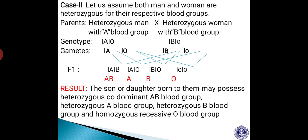Now let us go through case 2: let us assume both man and woman are heterozygous for their respective blood groups — unlike the previous case where both were homozygous. Parents are a heterozygous man with A blood group married to a heterozygous woman with B blood group. The genotypes are IAI0 for the man and IBI0 for the woman.